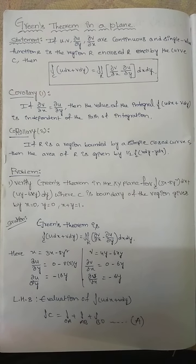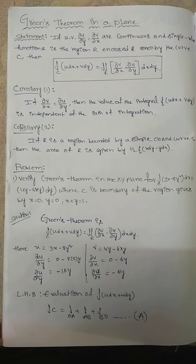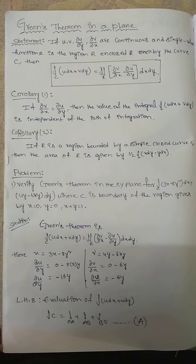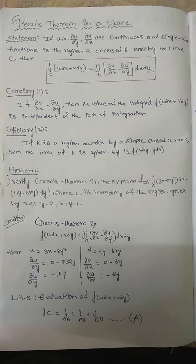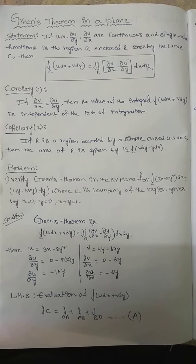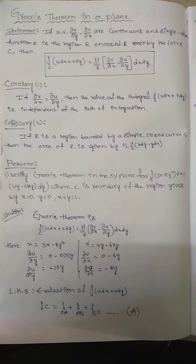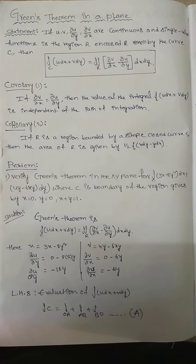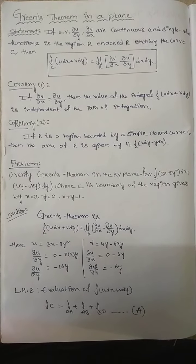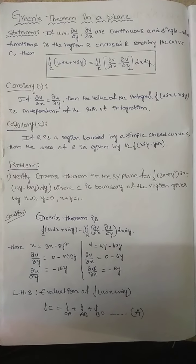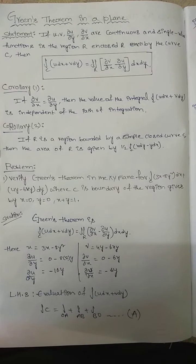Corollary 2: If R is a region bounded by a simple curve C, then the area of R is given by half integral C (x dy − y dx). Taking one problem: Verify Green's theorem in the xy plane for integral C (3x − 8y²) dx + (4y − 6xy) dx, where C is the boundary of the region given by x = 0, y = 0, x + y = 1.